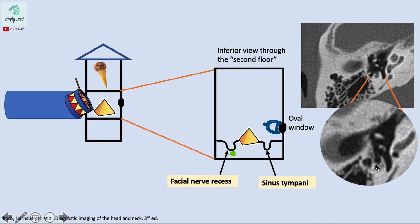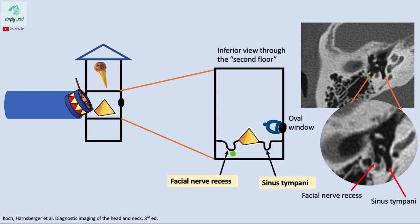Notice the facial nerve recess is adjacent to the mastoid segment of the facial nerve. The sinus tympani is important to examine because it is a clinical blind spot — cholesteatomas may frequently hide in this area. Always check the sinus tympani and report possible cholesteatomas hiding there.